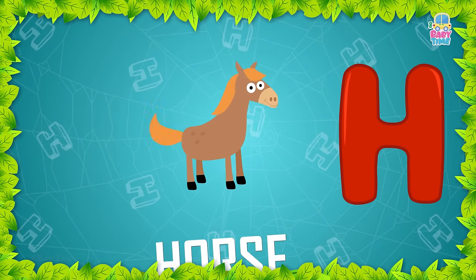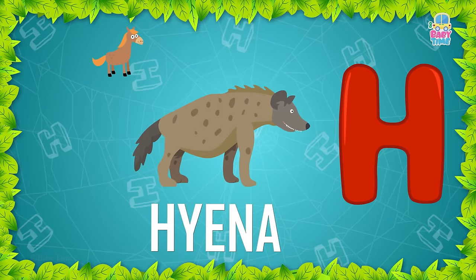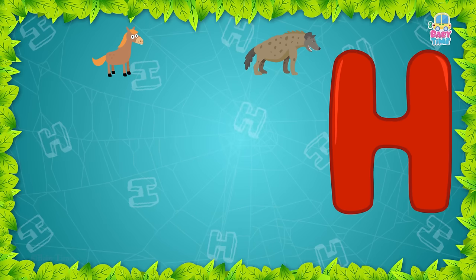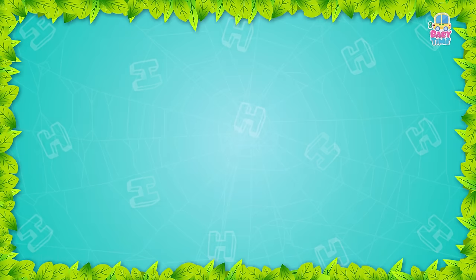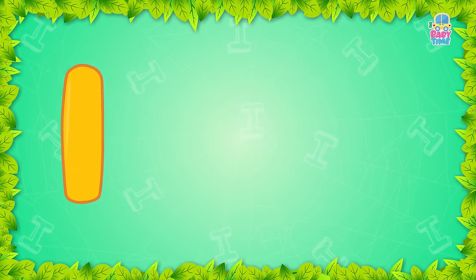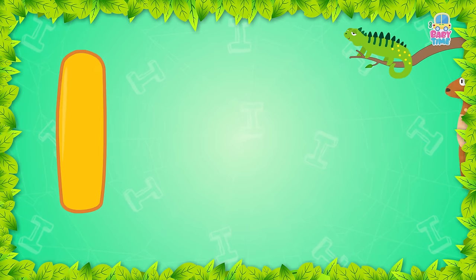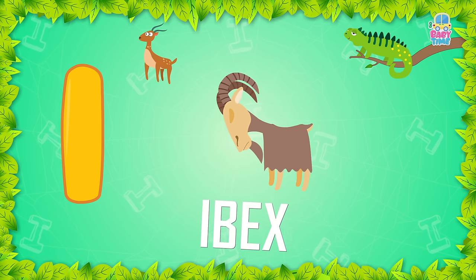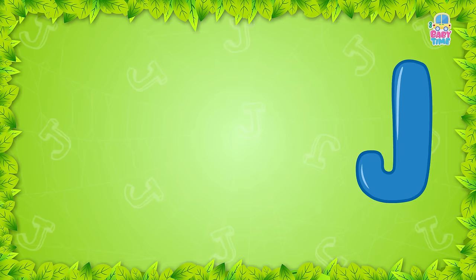What sound does H make? Look, there is H-H-Hen. Look, there is also H-H-Hippo. What sound does I make? Look, there is I-I-Iguana, I-I-Impala. Look, there is also I-I-Ibex.